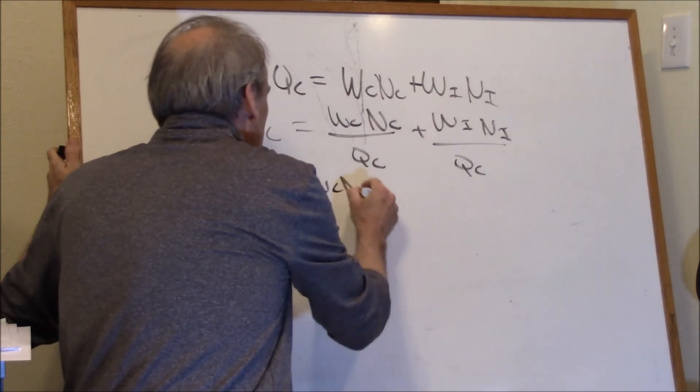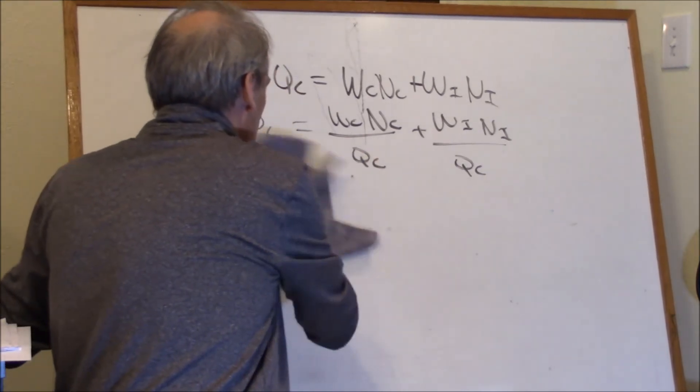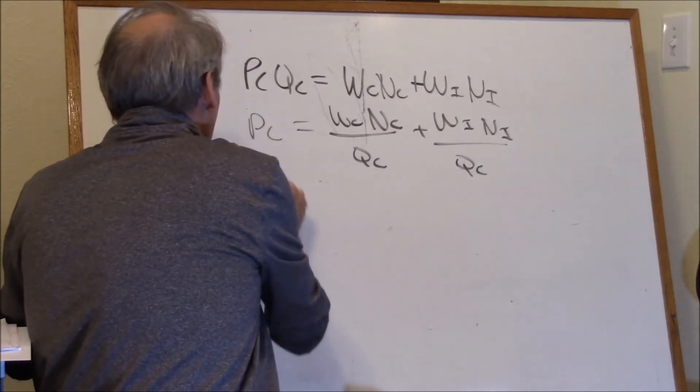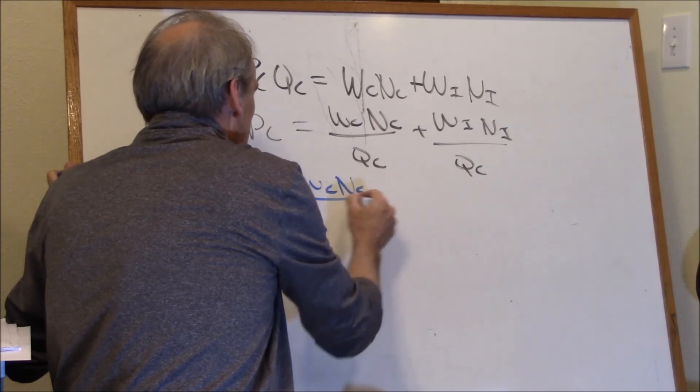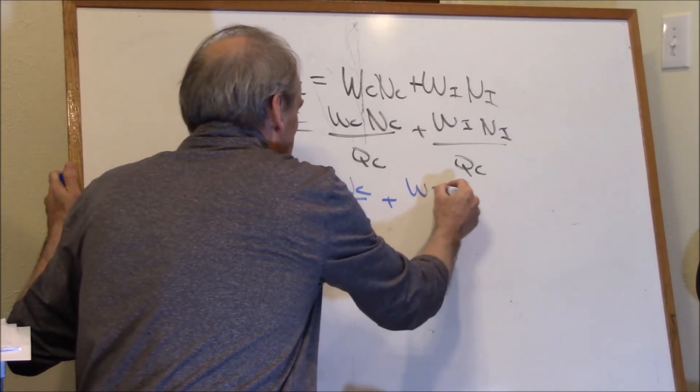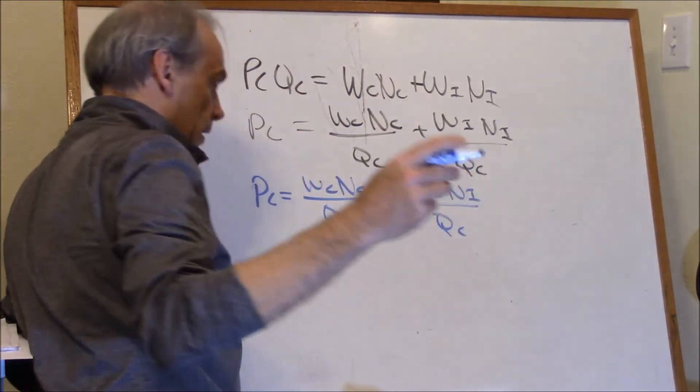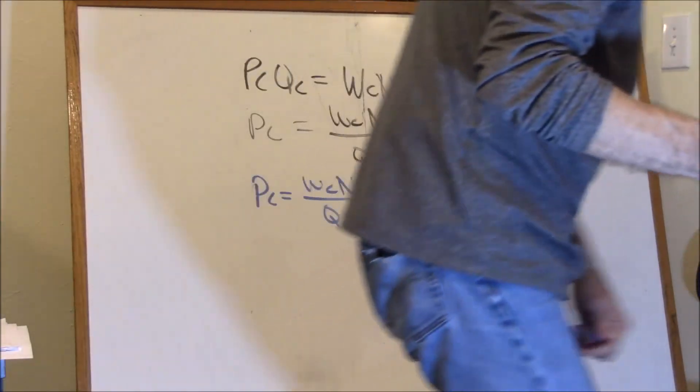Let's see here. WCNC. I'm going to write this in a different color because I'm afraid it's starting to run together. But, okay. PC is equal to WCNC over QC plus WINI over QC. We already did that, right, in the previous line. Very simple manipulation of the equation.